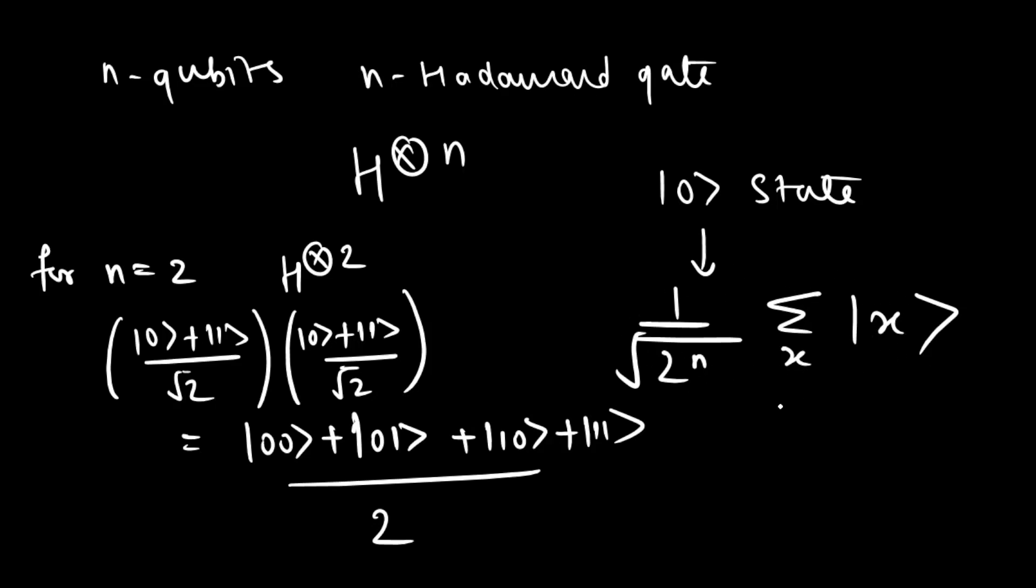This same result can be evaluated using this general equation that is for n equal to 2 all the possible values of x are 00, 01, 10 and 11 since x is in {0,1}.